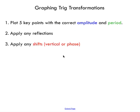Here are some key steps to follow when graphing. You can always start with the original sine or cos graph. I like to skip ahead and plot five key points with the correct amplitude and period immediately. In the first couple of examples I'll show you how to start from the original function and apply amplitude and period transformations. Then we'll apply any reflections, and then any vertical or phase shifts.